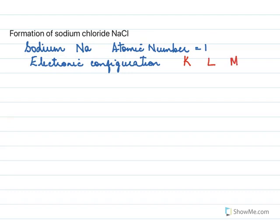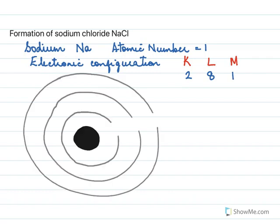Two electrons are in the first shell, eight electrons in the second shell — that makes it 10, that is 2 plus 8 — and one electron in the M shell. So sodium has got three shells: the first is called the K shell, then we have the L shell and the M shell.